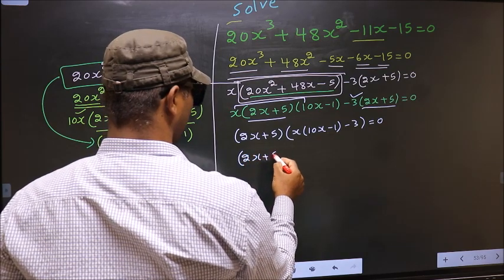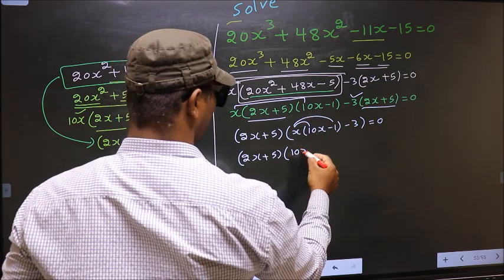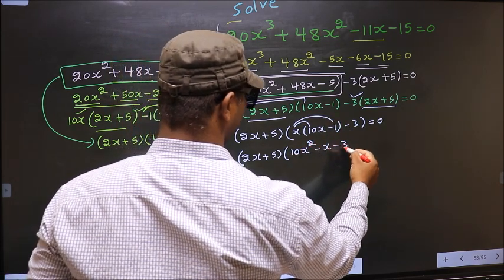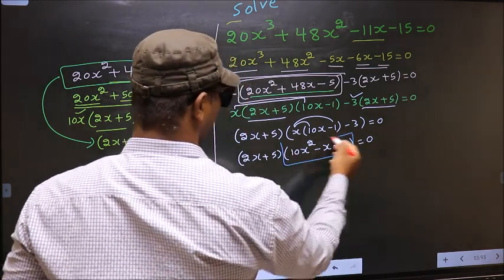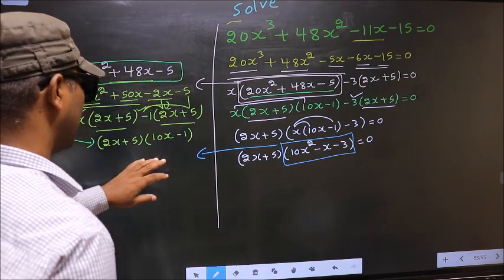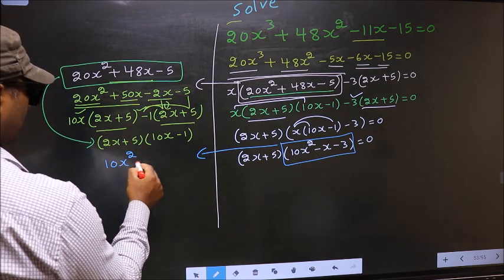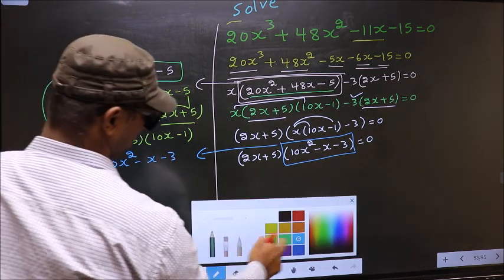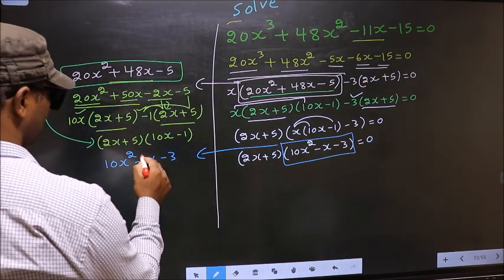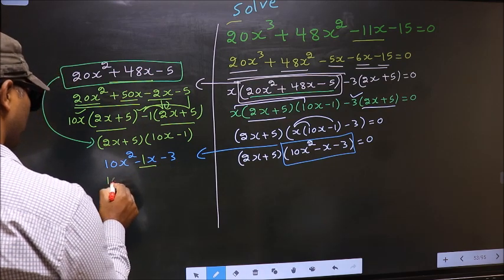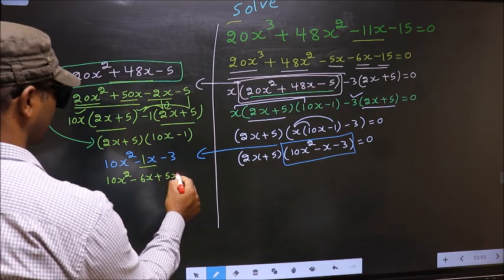(2x + 5) times, opening up the brackets, gives 10x² - x - 3 = 0. Now we got a quadratic here. I will factorize it. To factorize 10x² - x - 3, we should split the middle term -x. So in place of -x, I write -6x + 5x - 3.